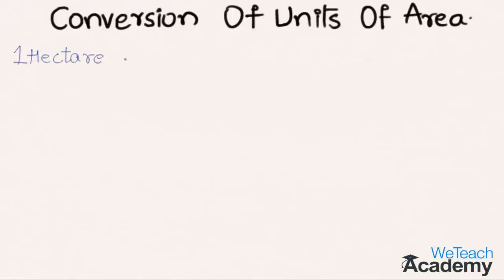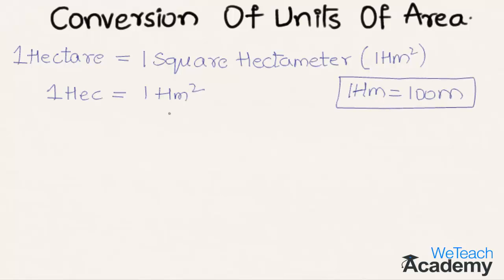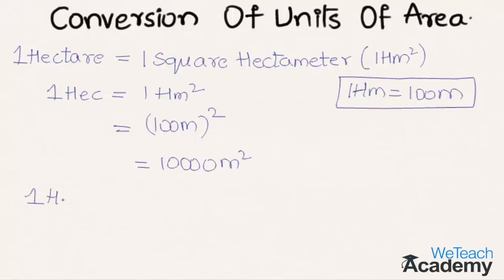One hectare is equal to one square hectometer, which can be represented symbolically as one hectare equals one hectometer square, where one hectometer is equal to 100 meters. Substituting the value of one hectometer, we get 100 meters whole square.